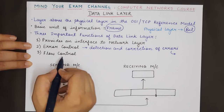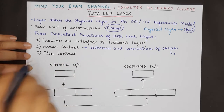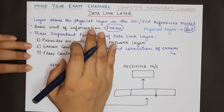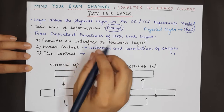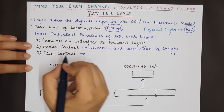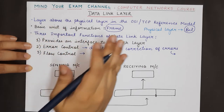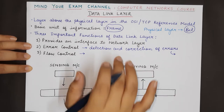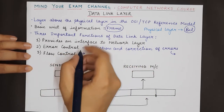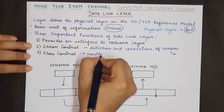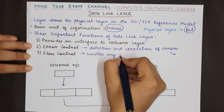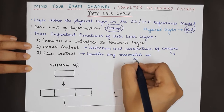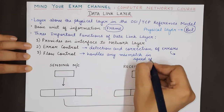The third most important function of the data link layer is flow control. Flow control refers to the mismatch in the speed of the sender and the receiver. The data link layer is responsible to make sure that the speed at which the sender is sending data, the receiver is also capable of receiving data at the same speed. It handles any mismatch in the speed of data transmission.